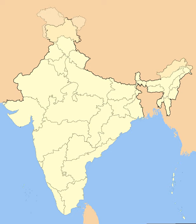Bombay state was enlarged by the addition of Saurashtra state and Kutch state, the Marathi-speaking districts of Nagpur division of Madhya Pradesh, and the Marathwada region of Hyderabad state. Rajasthan and Punjab gained territories from Ajmer and Patiala and East Punjab States Union respectively, and certain territories of Bihar were transferred to West Bengal.